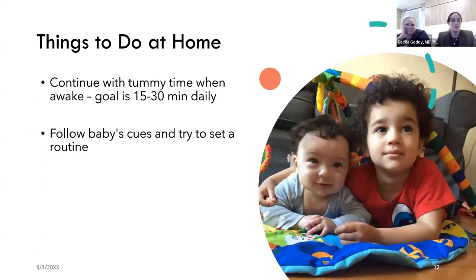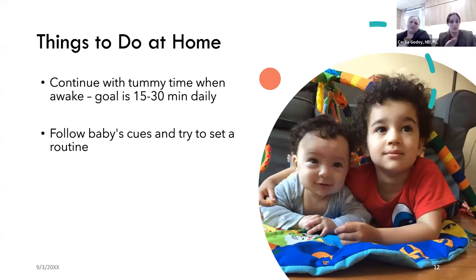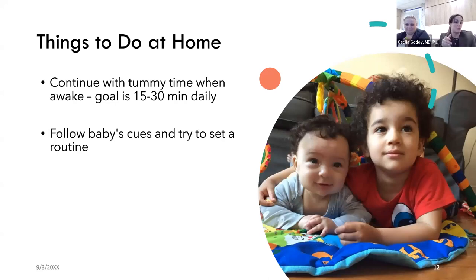At two months, the biggest thing we push is tummy time — we want fifteen to thirty minutes daily, not necessarily in one session. Most babies won't do it all at once, so do it in increments. It can be tricky to time — if they're too hungry they're upset, if they just ate they may spit up — but tummy time also promotes a round head and prevents flat-headedness in the back.